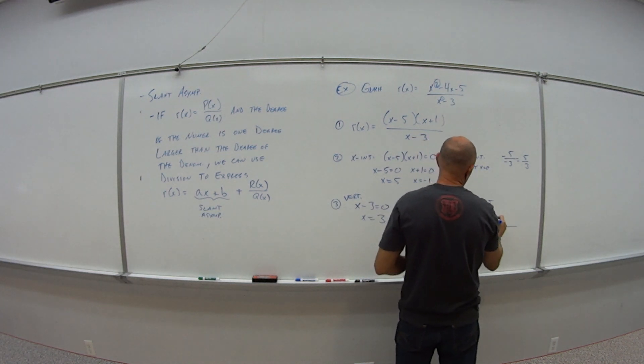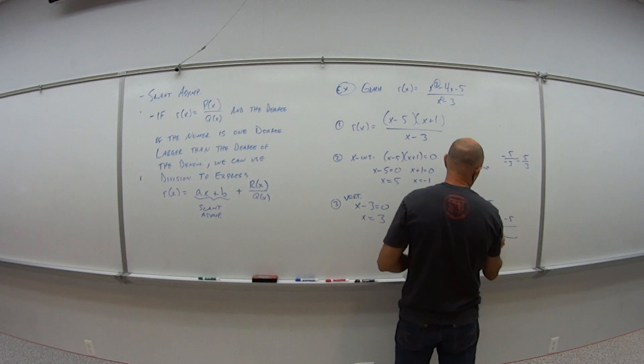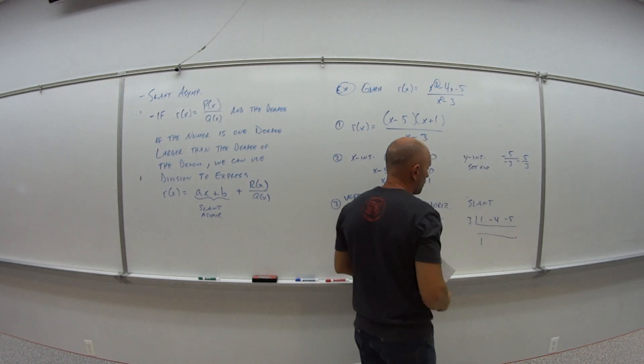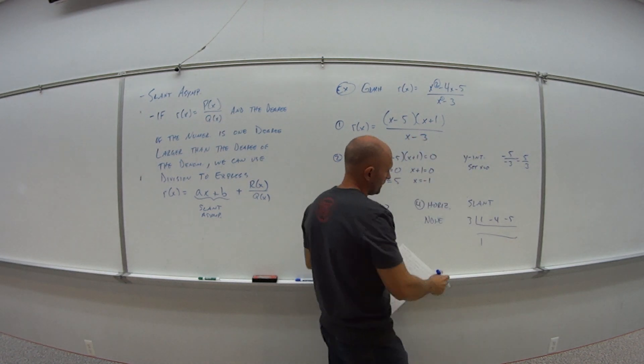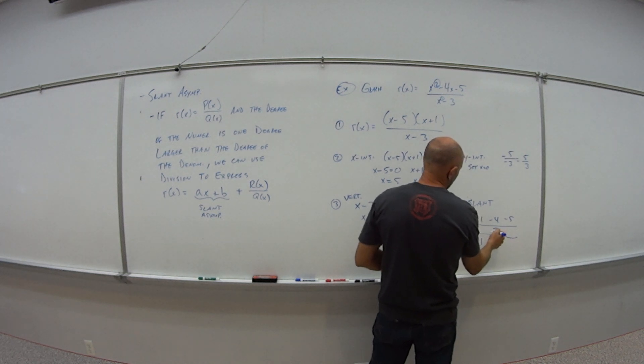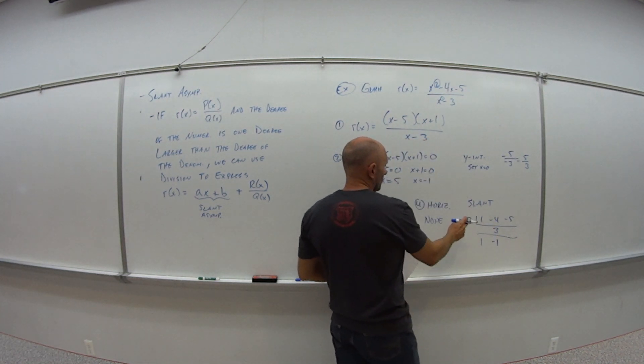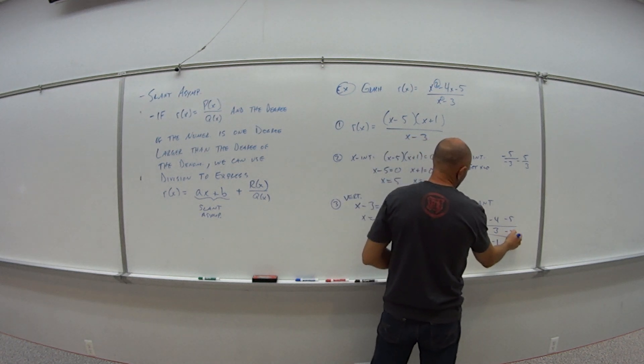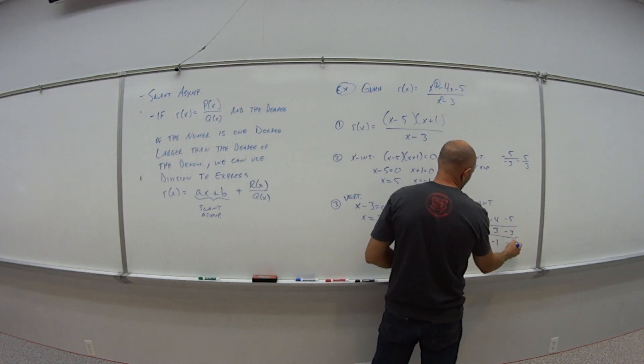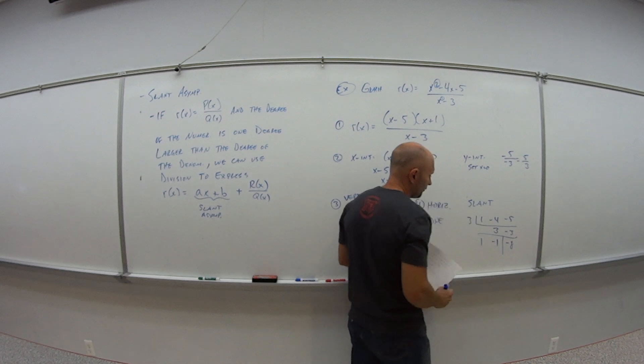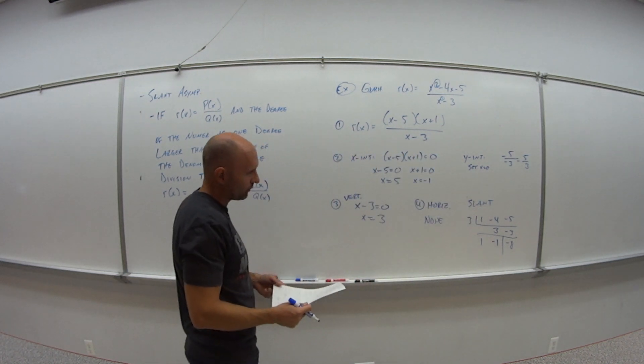So I get what? 1, negative 4, negative 5. So I bring down the 1. 3 times 1 is 3. Negative 4 plus 3 is negative 1. 3 times negative 1 is negative 3. Negative 5 minus 3 is negative 8. Remember that last piece is always our remainder.